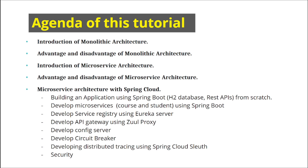We'll create a Spring Boot application from scratch so beginners can understand how to create a simple application using Spring Boot. We'll use the default H2 database which comes with Spring Boot. Then we'll create two separate microservices — Course and Student — using Spring Boot. We'll create a service registry using Eureka Server, use Zuul Proxy for the API gateway, develop a config server, create a circuit breaker, and set up distributed tracing using Spring Cloud Sleuth, and finally add security on top of that.